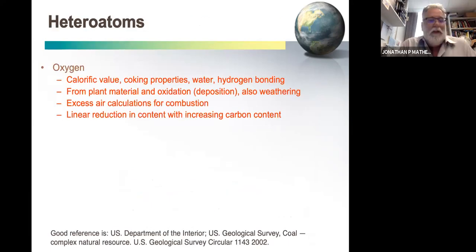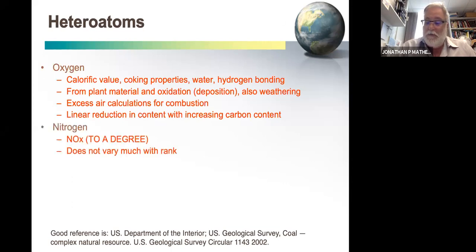So heteroatoms. Oxygen lowers your calorific value. If your coal gets oxidized by sitting out in the weather and the rain, it will impact your coking properties. It impacts your water holding ability through hydrogen bonding. Obviously, we get oxygen from the plant material. So biomass is actually quite oxygen rich. And obviously, from your combustion course, you know that we like to use the oxygen content for the excess air calculations as well. Generally, as you increase the carbon content, there is a pretty much linear reduction in the oxygen content. Nitrogen is obviously going to give you NOx to some degree. It's not 100%. Some of the nitrogen gets retained. Some of it gets converted to other things. It doesn't vary a lot with rank. It varies a little bit more with the biomass inputs and things like that. You don't tend to select coal based on nitrogen values like you do on sulfur.